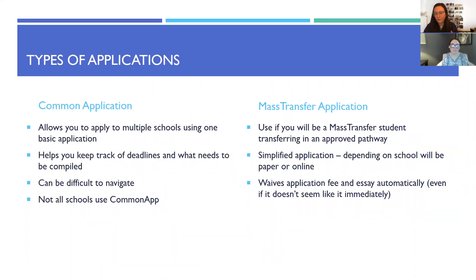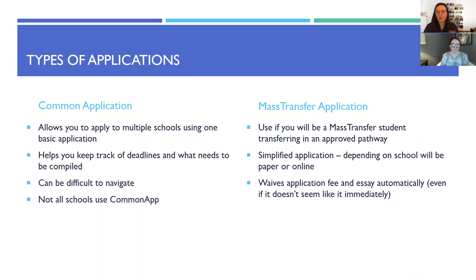There are four basic types of applications. The Common Application, which you've probably heard of, has been around forever. It allows you to apply to multiple schools at once. You create an account, and it can be done specifically for transfer, which makes it simpler. It helps you keep track of deadlines and figure out what needs to be compiled, doing the organization for you. It can sometimes be a little difficult to navigate, but it does simplify things if you're applying to more than one or two schools.